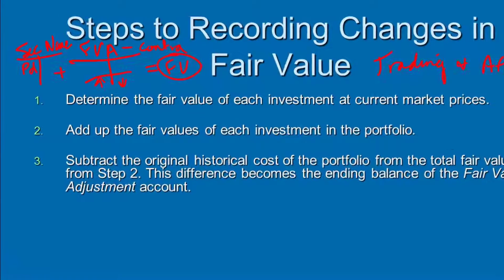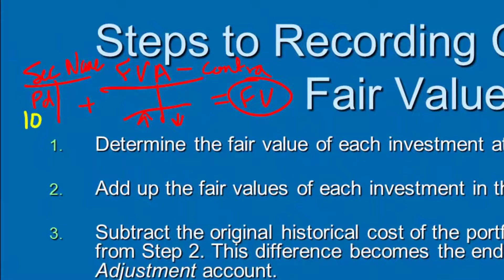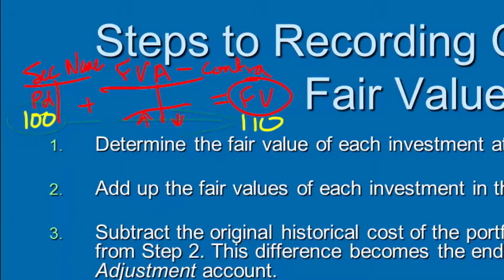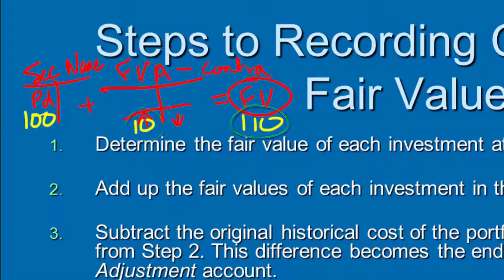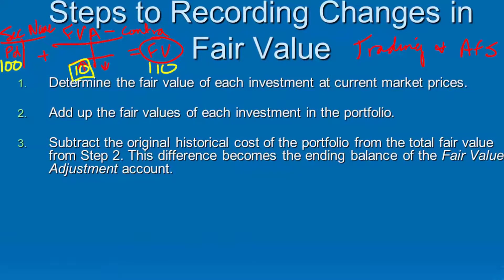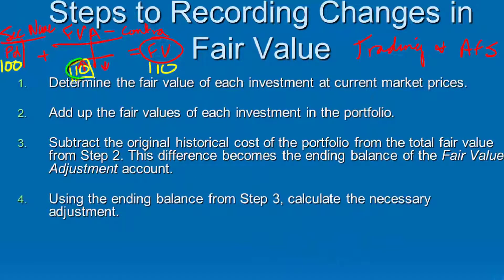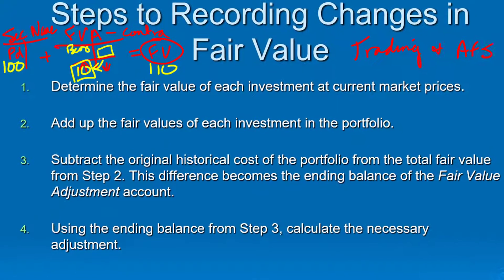For a simple example: say I bought a stock for $100 and at the end of the year it's worth $110. I've got to get the reported value to $110, so I put $10 in the fair value adjustment account. Then $100 plus $10 gives me $110. Step three is deciding what that balance needs to be so I can add the two accounts and arrive at fair value. Step four: once I know the desired ending balance and the beginning balance, I can determine what adjustment — what journal entry — is needed to reach that value.